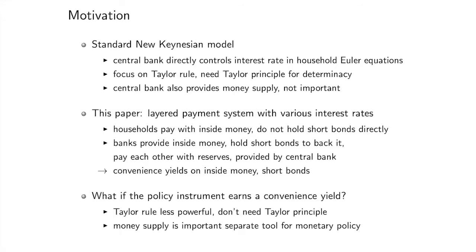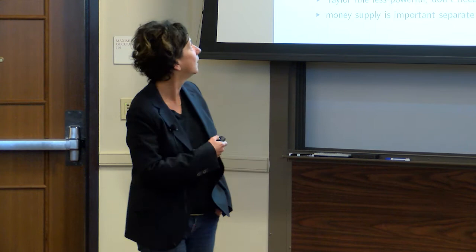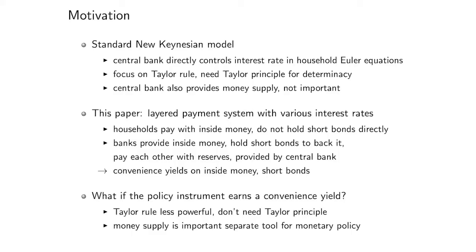We want to think about these various interest rates in a macro model. The natural step was to go to the standard New Keynesian model, in which the central bank directly controls the interest rate in the household Euler equation. There's a focus on Taylor rules for that interest rate, and in particular you need the Taylor principle to get determinacy — the central bank has to react more than one-for-one to inflation, otherwise the model is not determinate. The central bank also directly provides money to households; there are no banks, and this money provision doesn't really play any role.